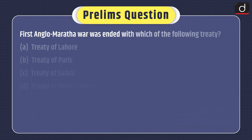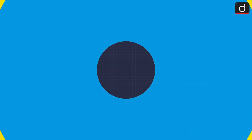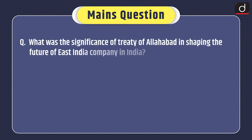Now it's time for the practice questions. Prelims question: The First Anglo-Maratha War was ended with which of the following treaties? Treaty of Lahore, Treaty of Paris, Treaty of Salbai, or Treaty of Seringapatam. Mains question: What was the significance of the Treaty of Allahabad in shaping the future of the East India Company in India? That's all for today. Stay tuned for the next episode. Thanks for watching.